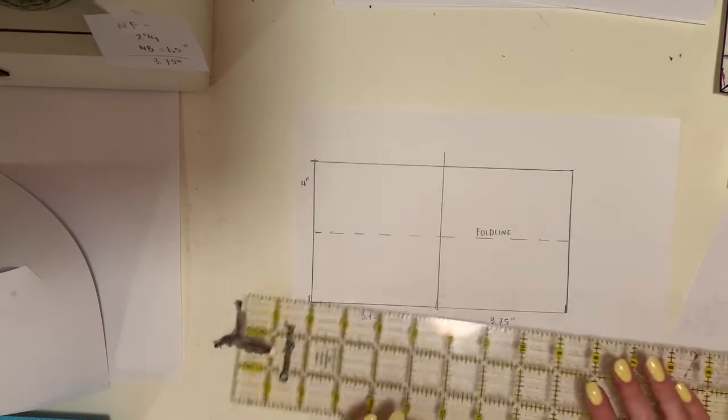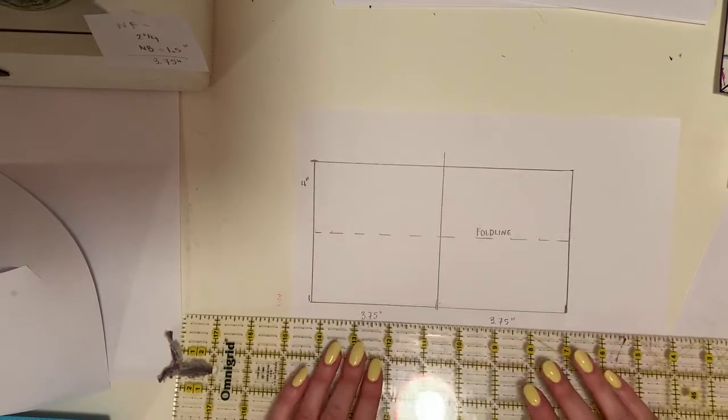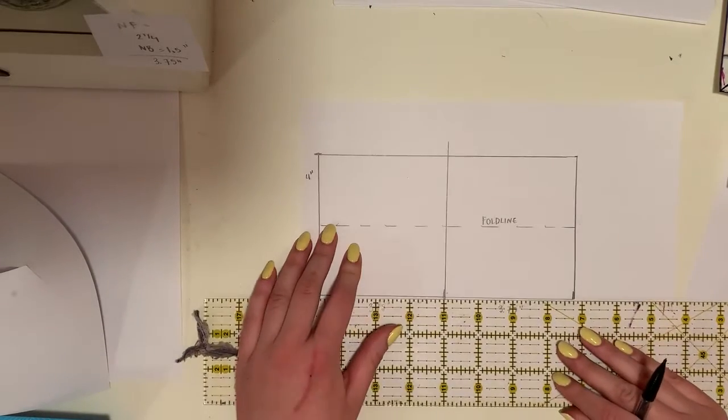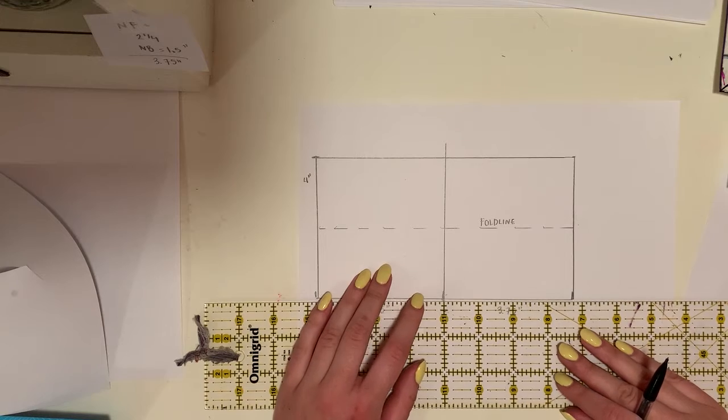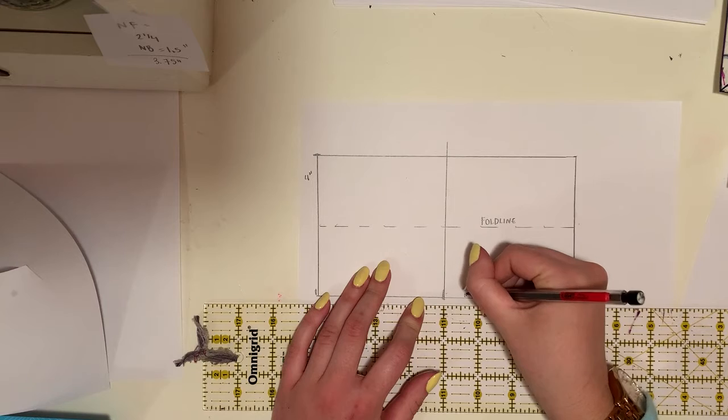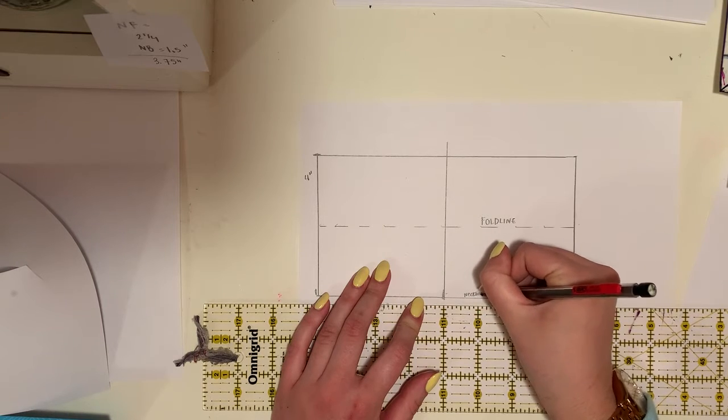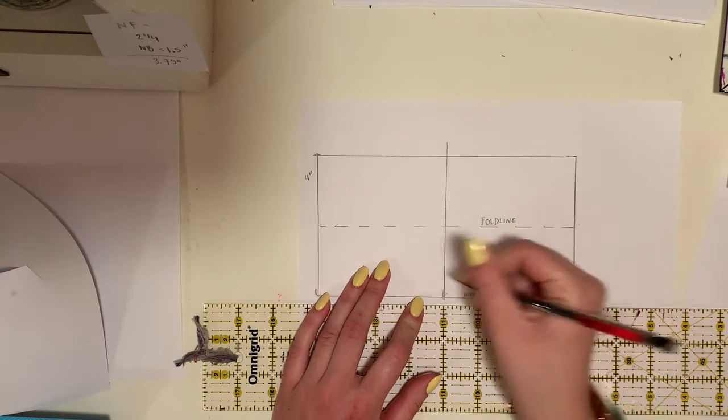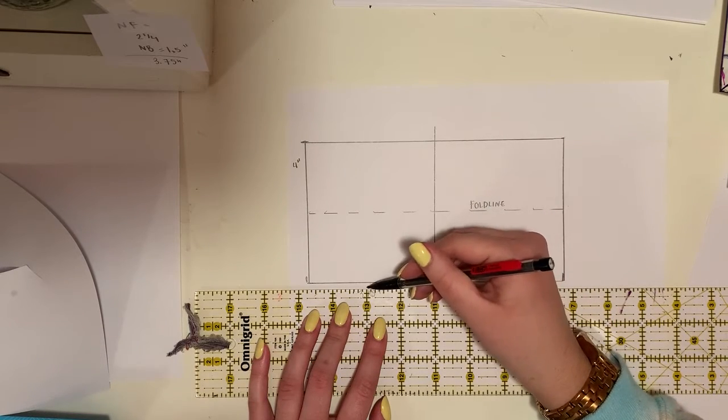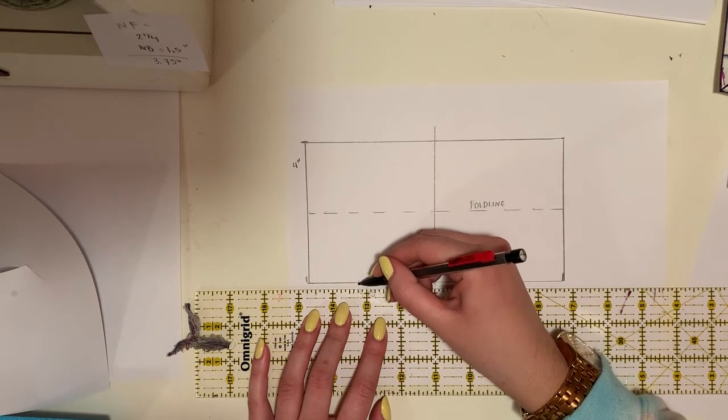Next I'm going to do my neckline front notches from the center front. So mine was 2 and a quarter inches. I'm going to do neckline front. Let me do it again through here, 1, 2 and a quarter, neckline front.